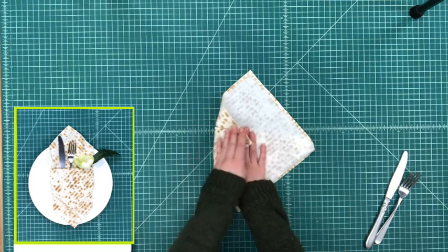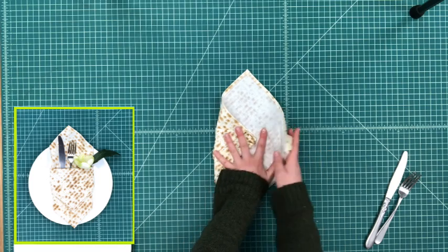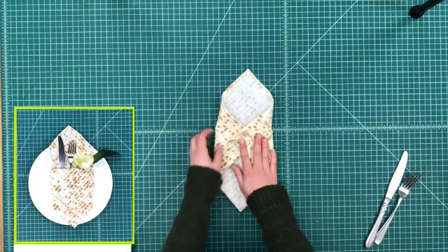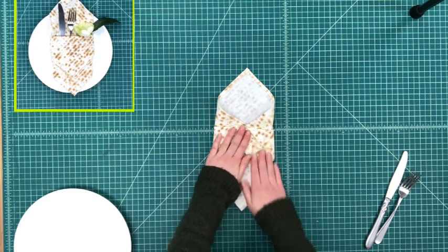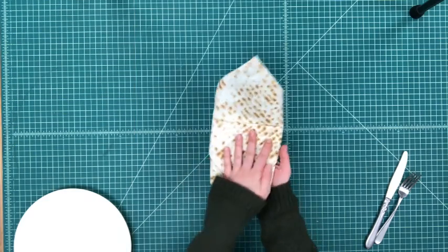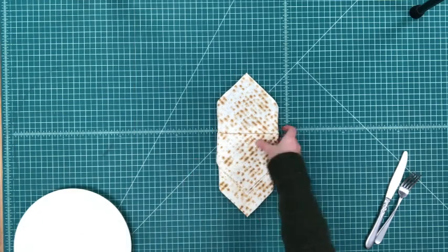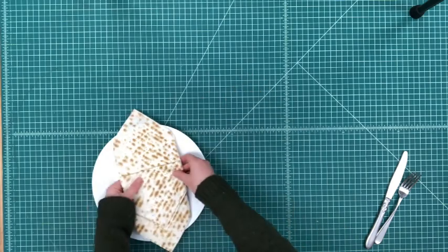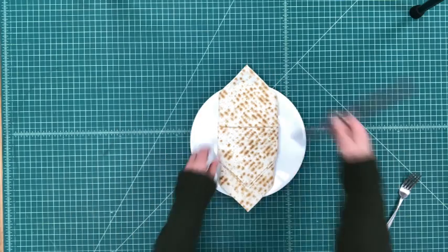Then flip it over and fold it into thirds. I would recommend ironing this as you go to make it a really crisp look, as crisp as you can because then it will stay that way. Then once you've folded it back over and you have the final look, stick whatever you want in there.